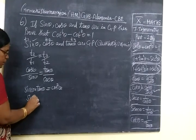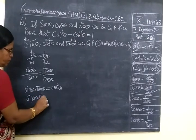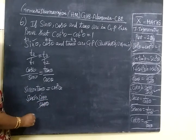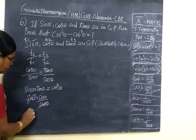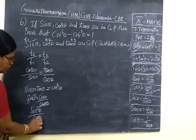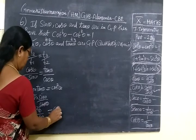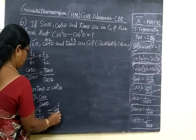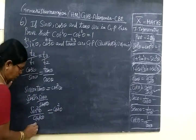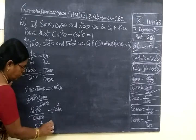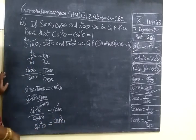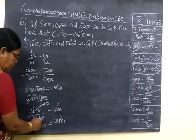So tan theta you can write it as sin theta by cos theta. So this is equal to sin theta by cos theta. So sin theta equal to cos theta, or cos theta equal to sin theta.